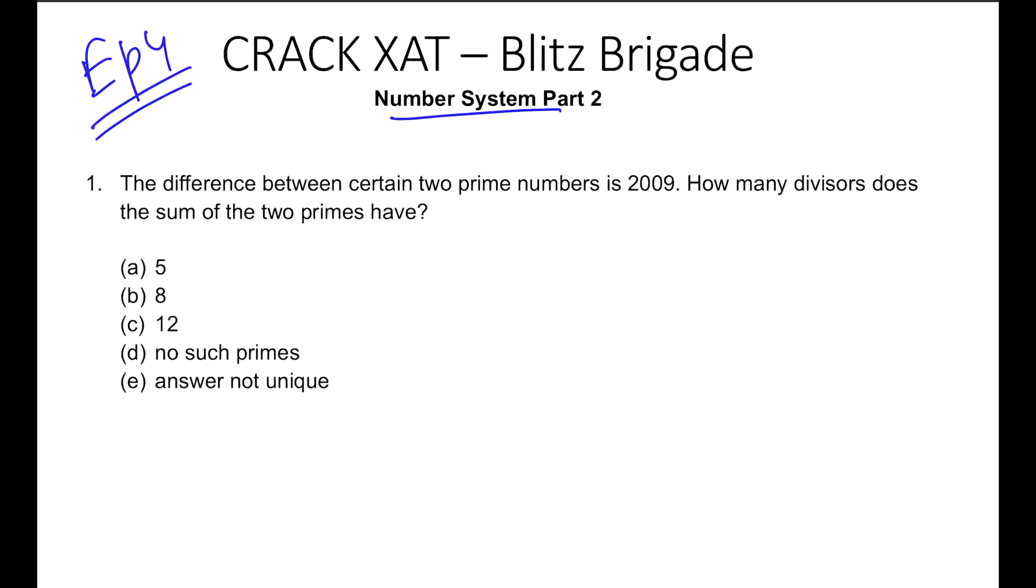Let's get started with the first question. The difference between certain two prime numbers is 2009, how many divisors does the sum of the two primes have? Now this question has two parts. First is 100% common sense.